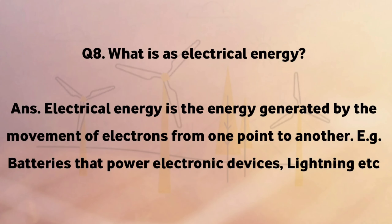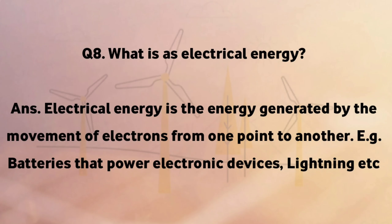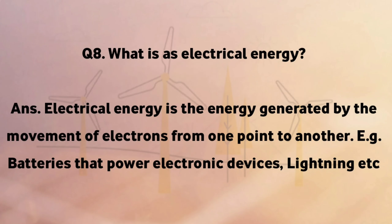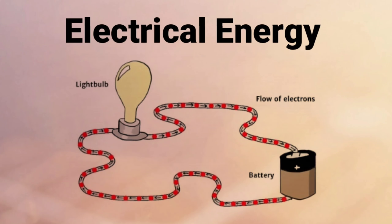What is electrical energy? Electrical energy is the energy generated by the movement of electrons from one point to another. Examples include batteries that power electronic devices and lightning.